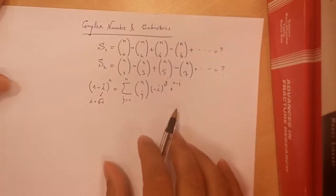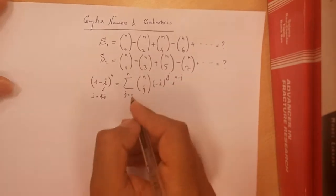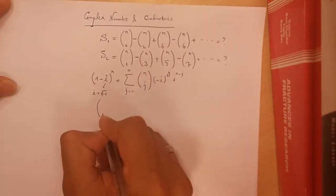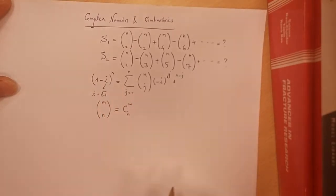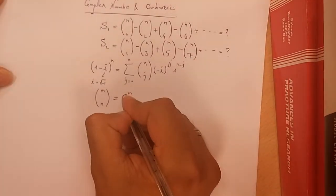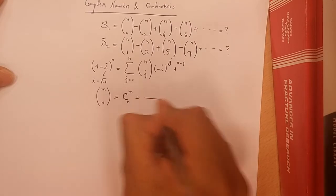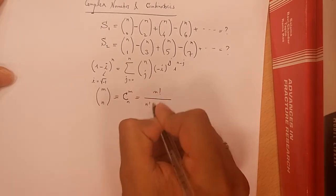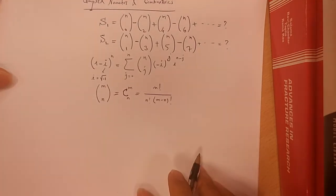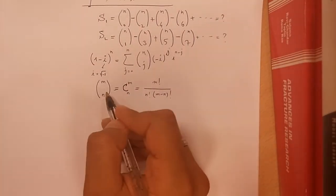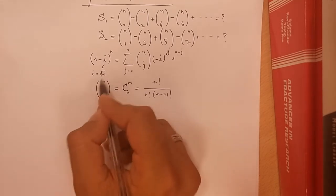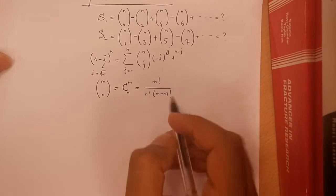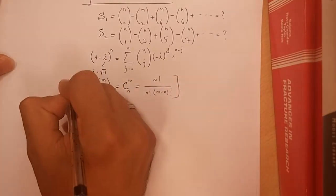Just to remind you: C(J,N), also denoted C_N^M, is M factorial over N factorial multiplied by (M minus N) factorial. This counts the number of ways to construct a subset of N different objects from M distinct objects.